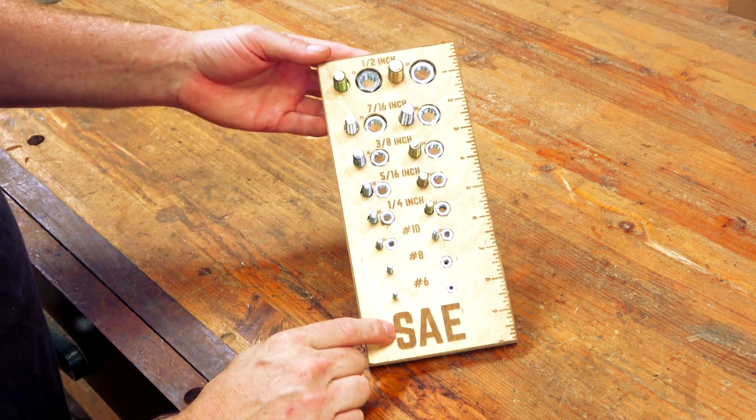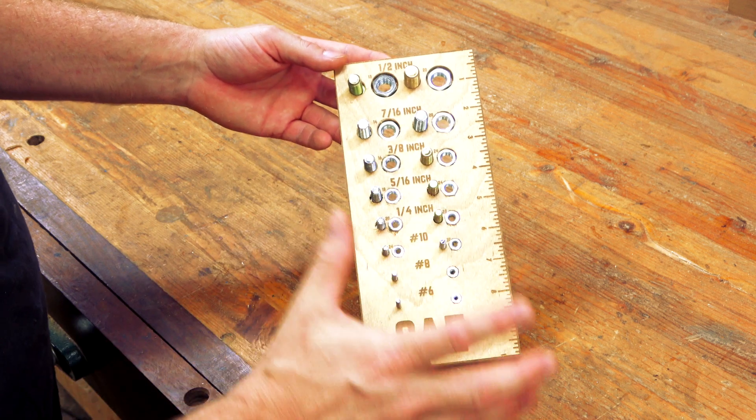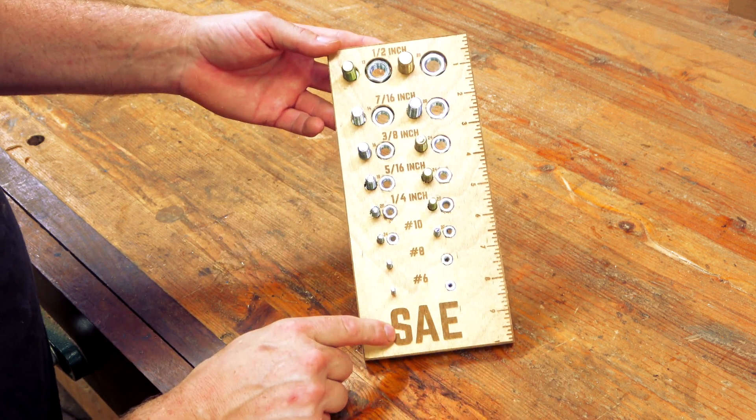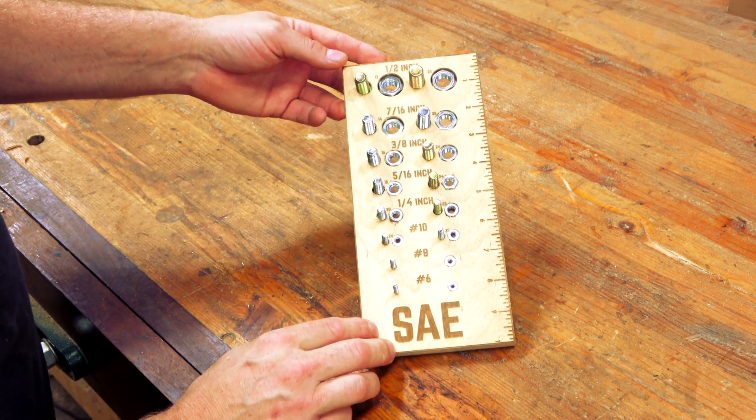Today we're going to make this nut bolt identifier, which is simply a tool that will allow us to figure out what sizes that we have in a bolt or a nut. These are SAE. They go from a half inch down to a number six. Let's get started.